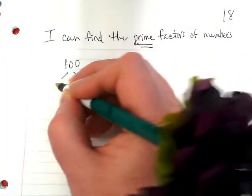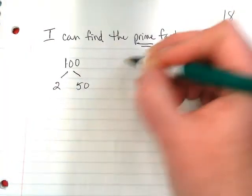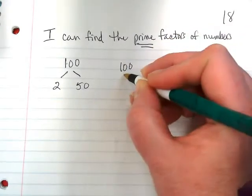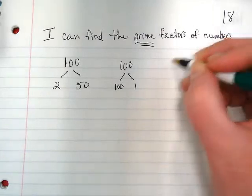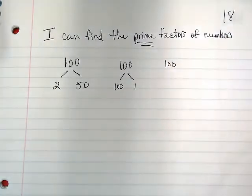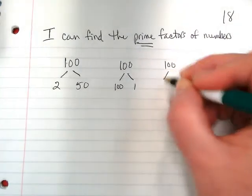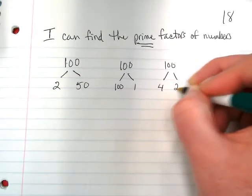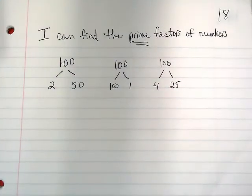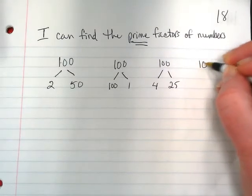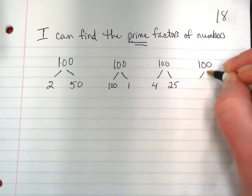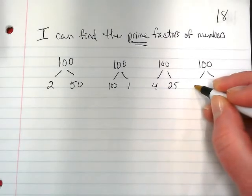Two and fifty. Anybody have another way? One hundred and one. I was thinking four times twenty-five. Twenty-five and twenty. There's lots of ways. Let's do one more. Let's do one hundred times five and twenty.